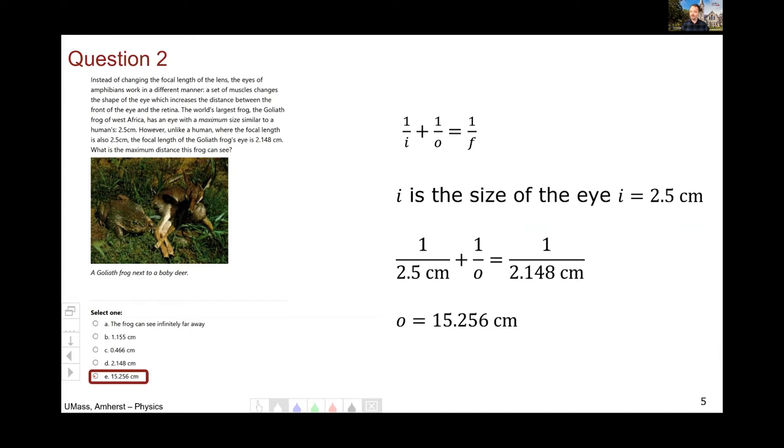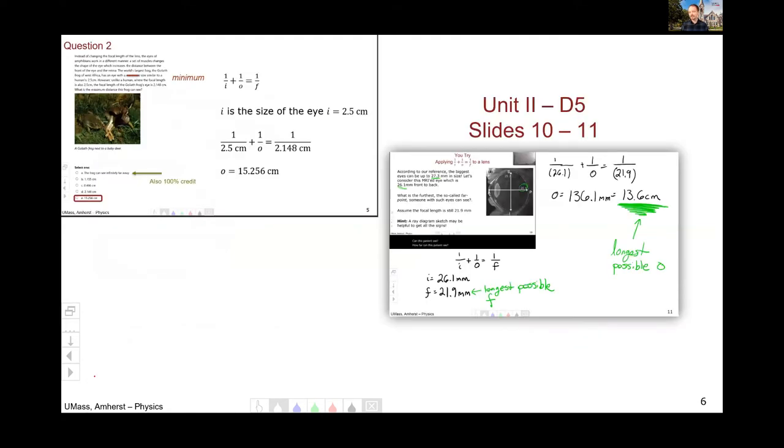However, there was a typo in this problem. This maximum really should have said minimum. And there were a couple of people who kind of got hung up on this and you're totally right. And with that typo, if you're really thinking about it, correct answers that you would come up with is infinitely far away. So I gave full credit for that as well. This is very similar. We did a lot of problems like this in unit two thinking about the distance people can see given focal lengths and eyeball size and all that sort of stuff.